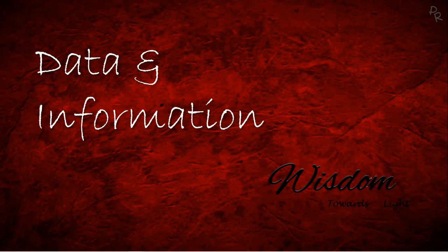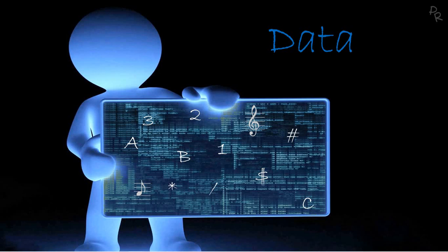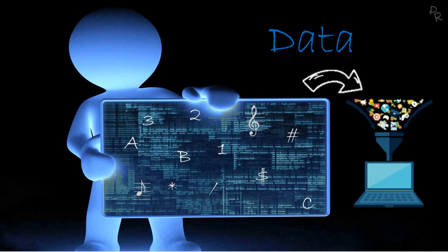Hi guys, welcome to Wisdom. Today I am discussing the differences between data and information. Data is a collection of raw facts and figures — it can be a collection of letters, digits, characters, etc., which is not organized. It is something which does not have any meaning. Data is the input which is given to the computer for processing.